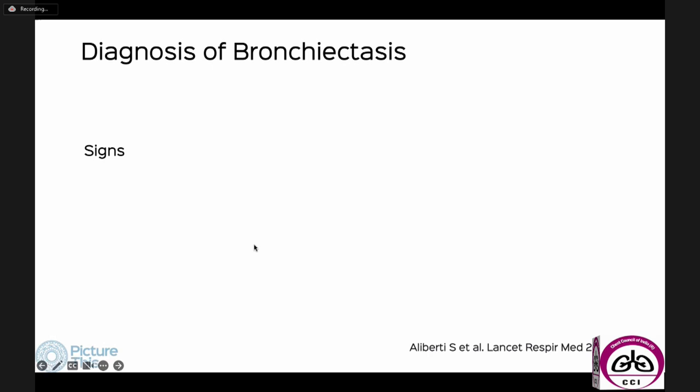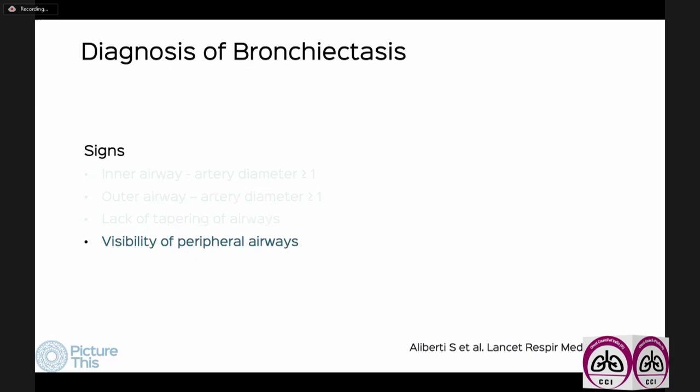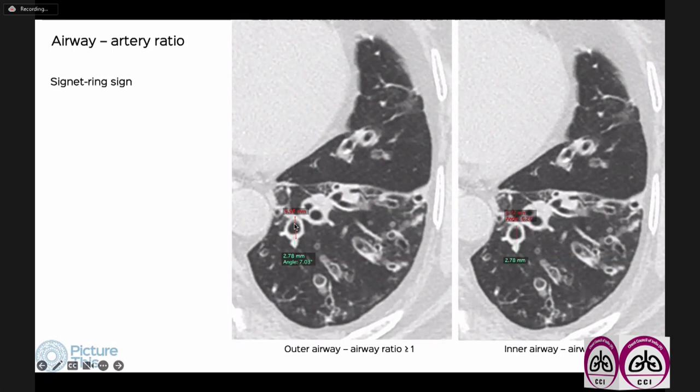The primary signs used to diagnose bronchiectasis are: airway-to-artery diameter greater than one — whether measuring inner or outer diameter doesn't matter — lack of tapering of airways, and visibility of peripheral airways. Let's look at each of these.